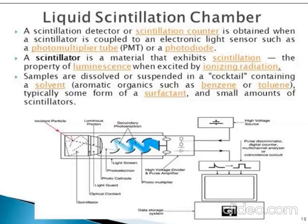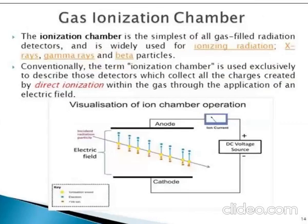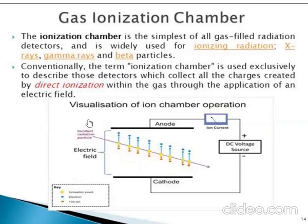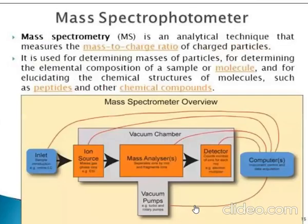The gas ionization chamber is the simplest of all gas radiation detectors and is widely used for detecting ionizing radiation — X-rays, gamma rays, and beta particles. It is used exclusively to describe detectors which collect all charges created by direct ionization within the gas through the application of an electric field. In operation, incident radiation between the anode and cathode with a DC voltage source produces a current that can be read as a measurement.